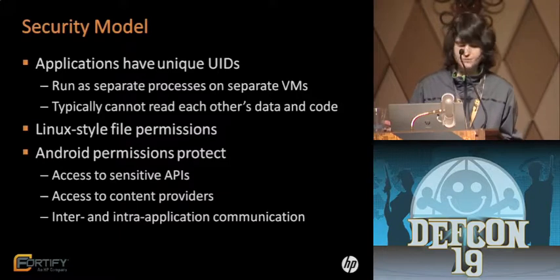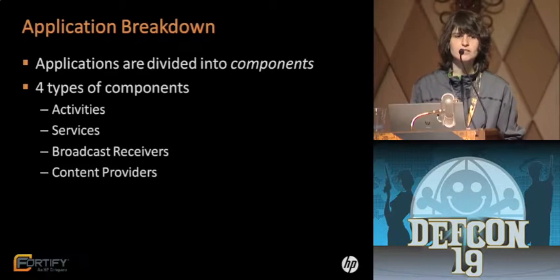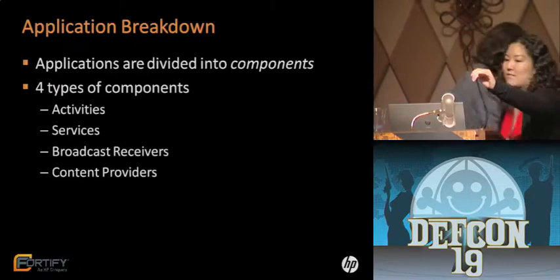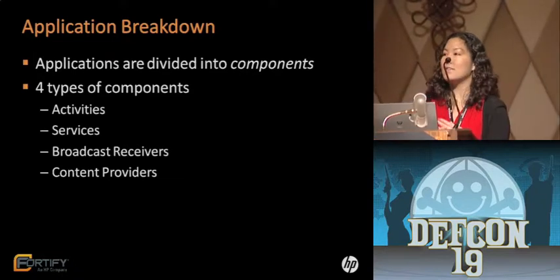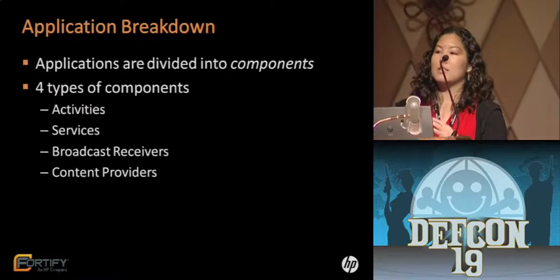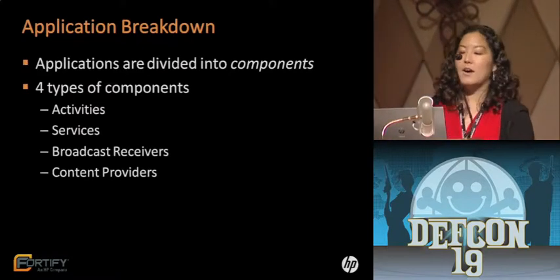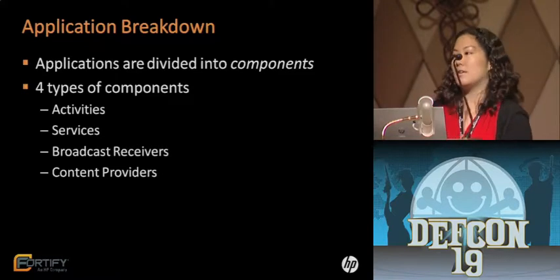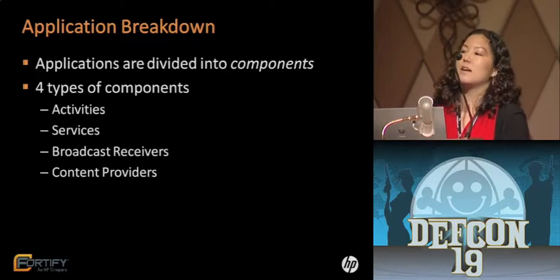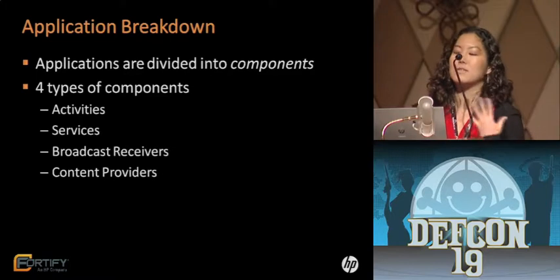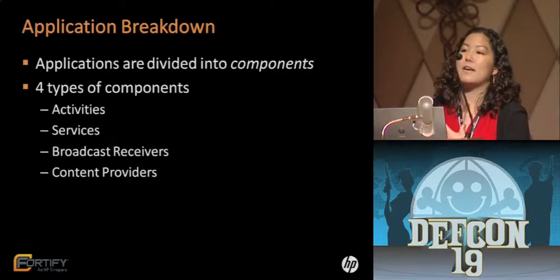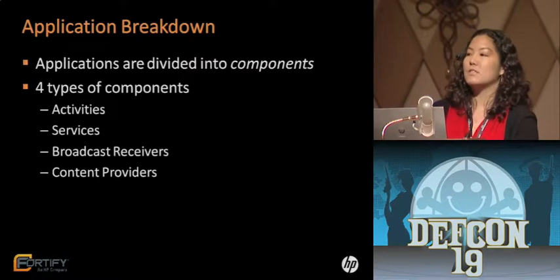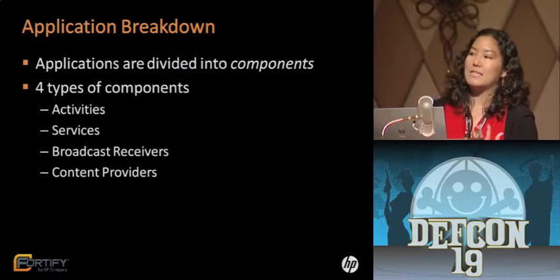Now let's talk about the different components of Android applications. Applications are divided into four types of components. The first type is an activity — activities are basically the user interfaces, so each screen you see in an Android application is its own activity. Services run in the background and don't interact with the user, suited for long-running processes like a music player. Broadcast receivers receive messages from other components — for system event notifications or messages from third-party applications. And finally, content providers — you can think of them as databases.